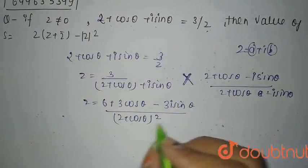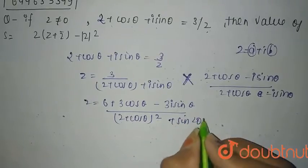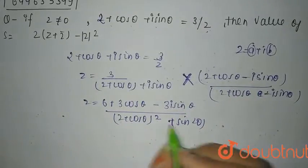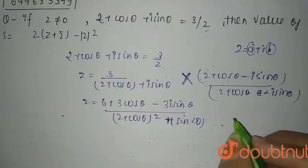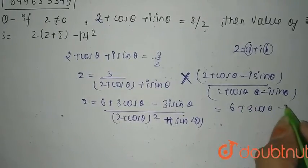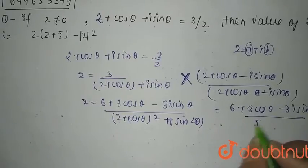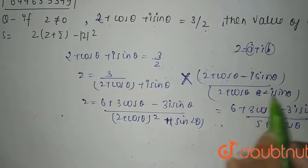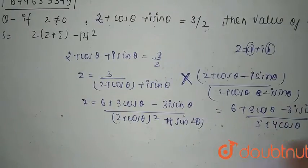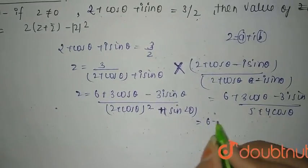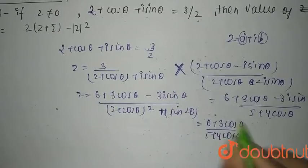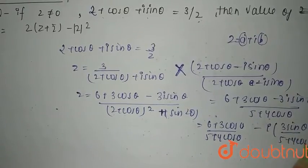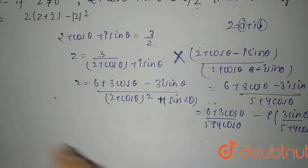That means rationalizing: cosθ whole squared plus sin squared theta. We have just rationalized it using the (a² − b²) identity, so i squared becomes minus and that term comes positive. This gives z equal to (6 + 3cosθ − 3i·sinθ) divided by (5 + 4cosθ). So the real part is (6 + 3cosθ)/(5 + 4cosθ) and the imaginary part is −3sinθ/(5 + 4cosθ).